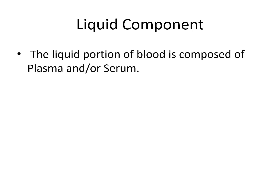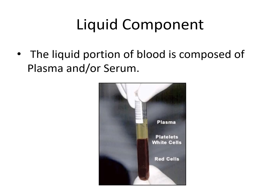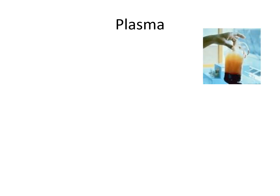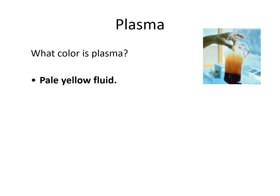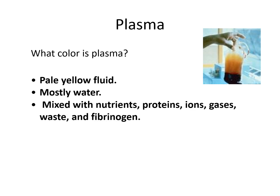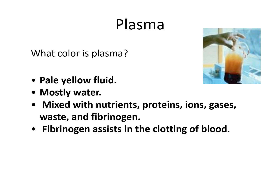Let's talk about the liquid component of blood. The liquid portion of blood is composed of plasma and/or serum. When whole blood is placed in the centrifuge and spun for a certain amount of time, you will see a division: plasma, which is the yellow fluid at the top; the platelets and white cells in the middle; and the red cells that settle at the bottom. Plasma is a pale yellow fluid, mostly water, mixed with nutrients, proteins, ions, gases, waste, and fibrinogen. Fibrinogen assists in the clotting of blood.